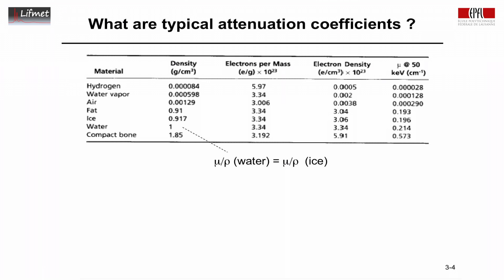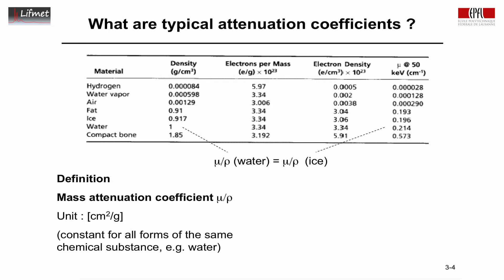So, we get a universal constant for that particular compound. And therefore, it is useful to define the mass attenuation coefficient, which is μ over ρ. It has the unit of centimeters squared per gram. And this would then give us a value that is constant for all forms of the same chemical substance, in this case, for example, water. So, the mass attenuation coefficient is defined as the linear attenuation coefficient divided by the density of the compound.